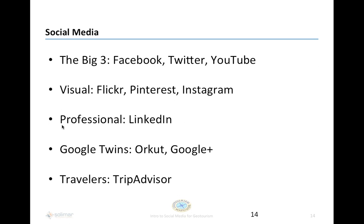The social media landscape is very broad. At the top we have the big three: Facebook, Twitter, and YouTube. YouTube is a video-sharing platform. Twitter is a micro-blogging site where you push small messages to people. We have the visual platforms — Flickr, Pinterest, and Instagram — which we'll talk about in a later webinar. There's LinkedIn for professional networking, Orkut and Google+ which are similar to Facebook, and finally TripAdvisor, where travelers share information about their experiences — a really important platform in tourism marketing.